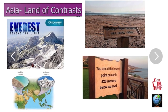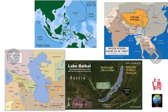Asia is a land of contrasts. Two notable landforms: Mount Everest is the highest point on Earth, and the Dead Sea is the lowest exposed point on Earth. The Plateau of Tibet is the highest and largest plateau in the world. The South China Sea is the largest sea, with an area of 2,974,600 square kilometers. The Caspian Sea is the largest lake, and Lake Baikal is the largest and deepest freshwater lake.